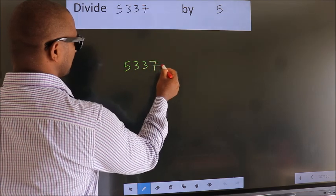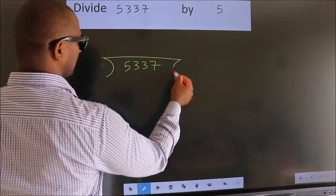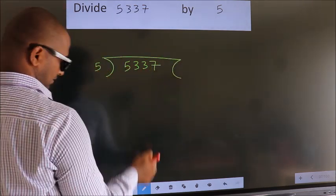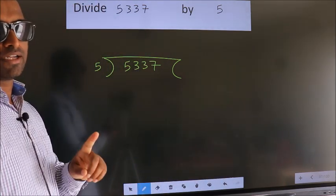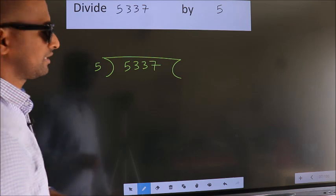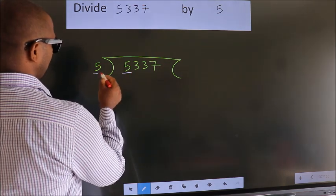5337 here, 5 here. This is your step 1. Next, here we have 5, here 5.